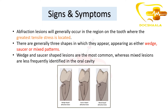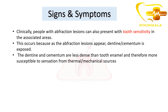The signs and symptoms — these lesions generally occur in the region of the tooth where there is greatest tensile stress. As you can see in this image, there are three shapes in which they appear: wedge-shaped, saucer-shaped (which looks like a cup and saucer), and mixed-shaped. Wedge shape has a somewhat acute angle, saucer shaped is semicircular, and mixed shape combines both. Wedge and saucer shaped lesions are the most common, whereas mixed lesions are less frequently identified.